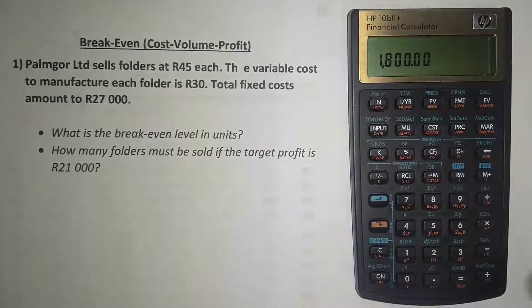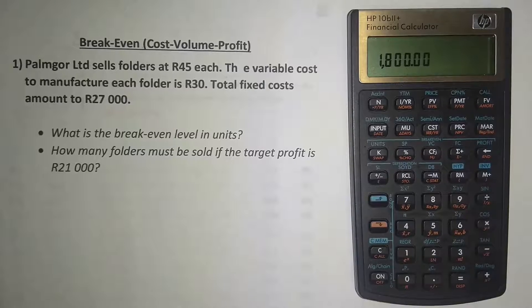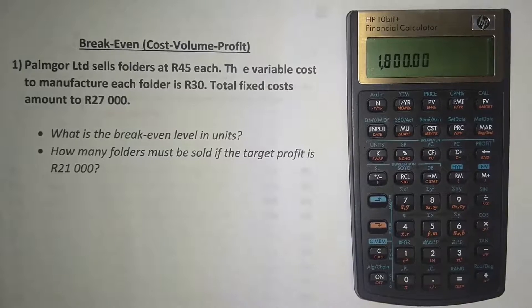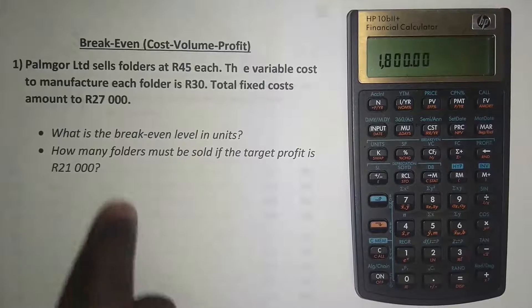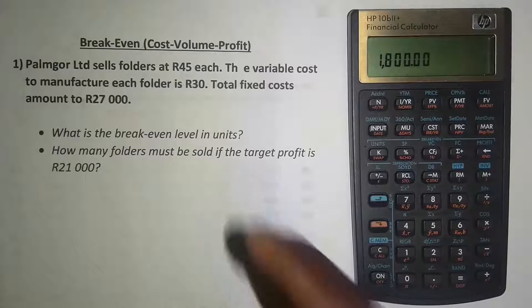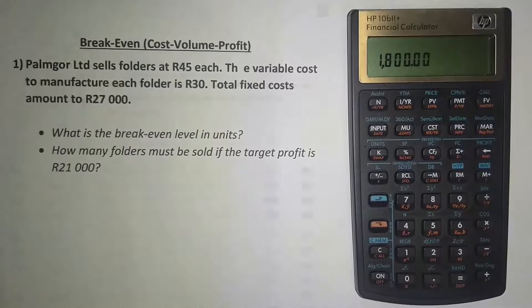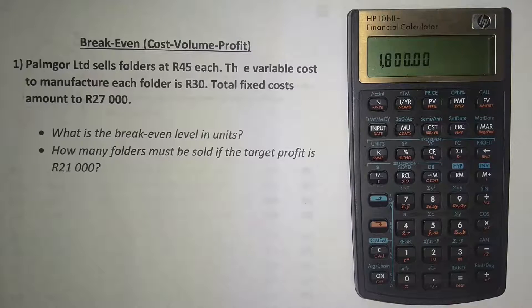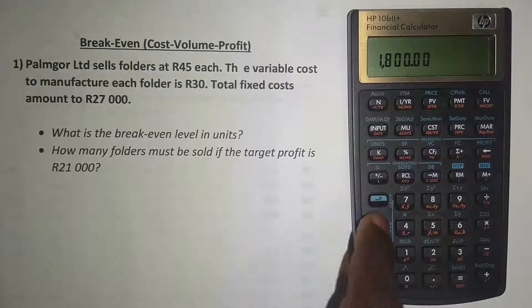That's how many folders should be sold if you had to break even — 1800 folders. Now let's look at the second one: how many folders must be sold if the target profit is 21,000 Rand? Let me clear my work and then we can do this again.